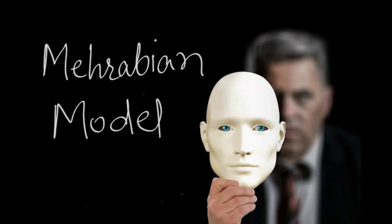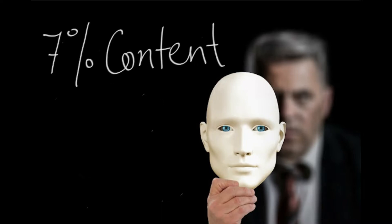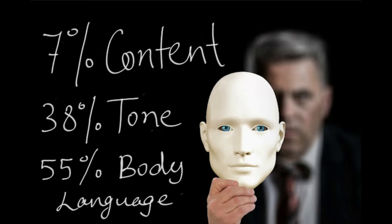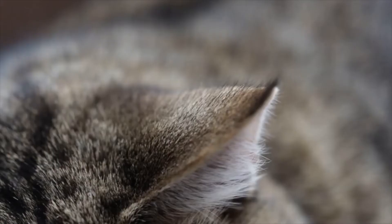What this rule basically says is that human interactions can be divided into three groups, each carrying its own weightage. The first is content of the conversation which carries a weightage of 7%. Second is the tone of the voice which carries a weightage of 38%. And lastly, the body language of the person which carries a weightage of 55%. As you can see, body language and tone carry more weightage than the actual content of the conversation. In our everyday lives, we concentrate on the exact opposite.